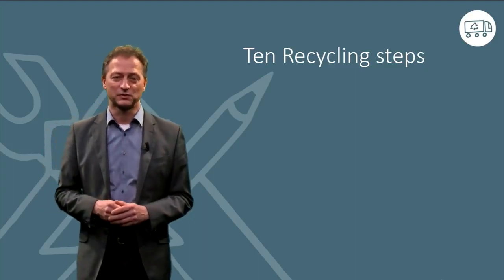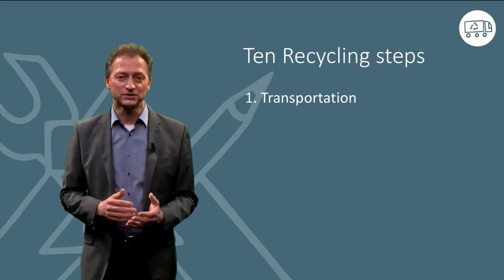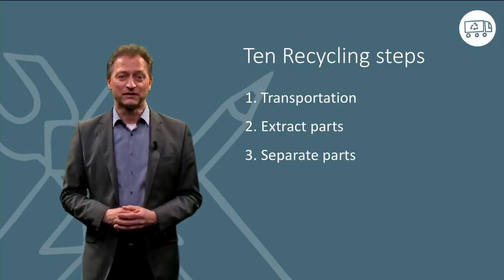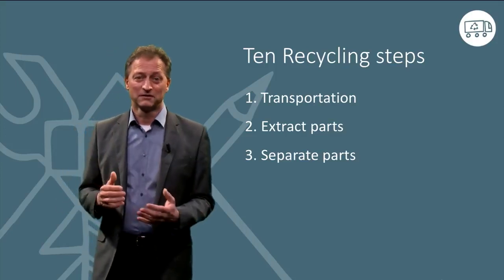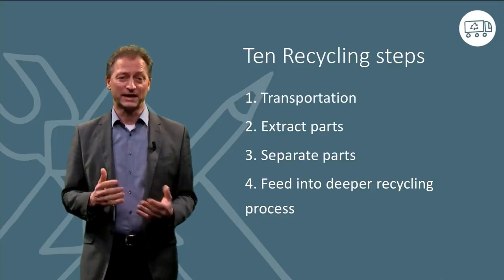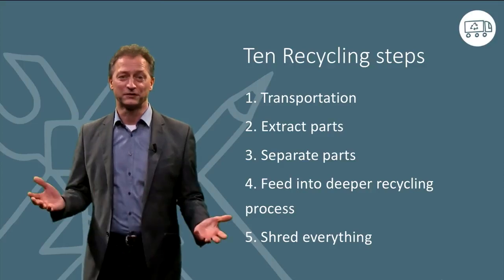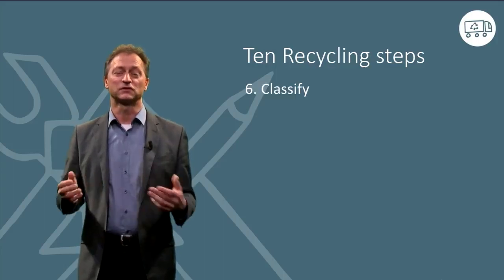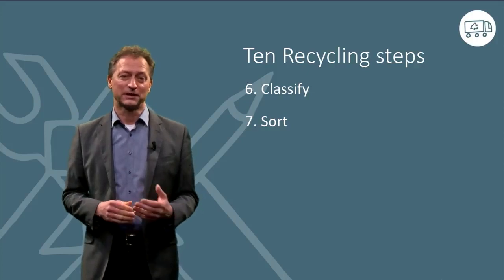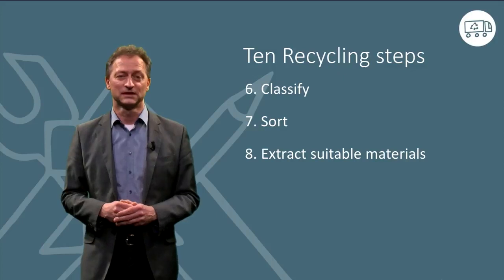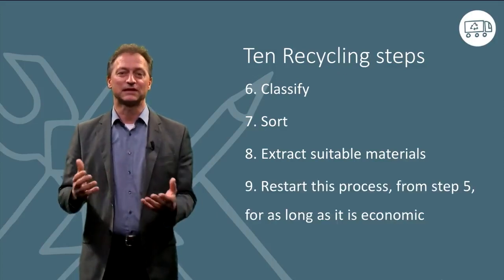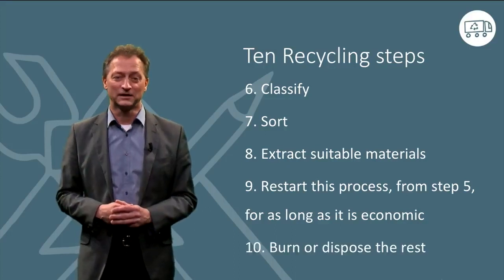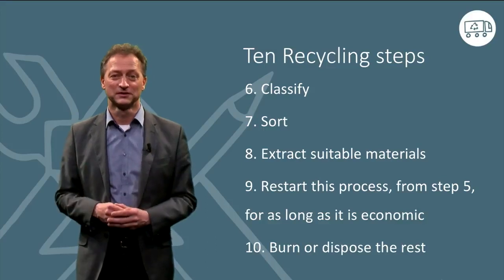In short, these steps will be first, the transportation of the product; second, extract the parts which can be reused; third, separate those parts which are already in a decent quality; feed the rest into the deeper recycling process will be the next step and the fifth step, shred everything. Next step will be to classify it and afterwards we have to sort it. At the eighth point, we have to extract suitable materials out of the process and then, if possible, in the next step, restart this process from step five as long as it is economically feasible. Finally, step 10, burn or dispose of the rest.